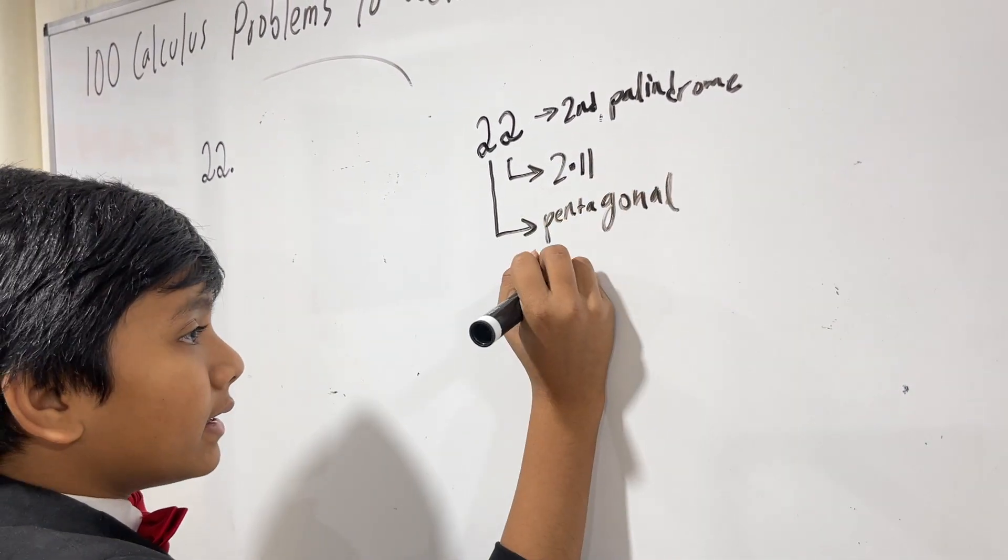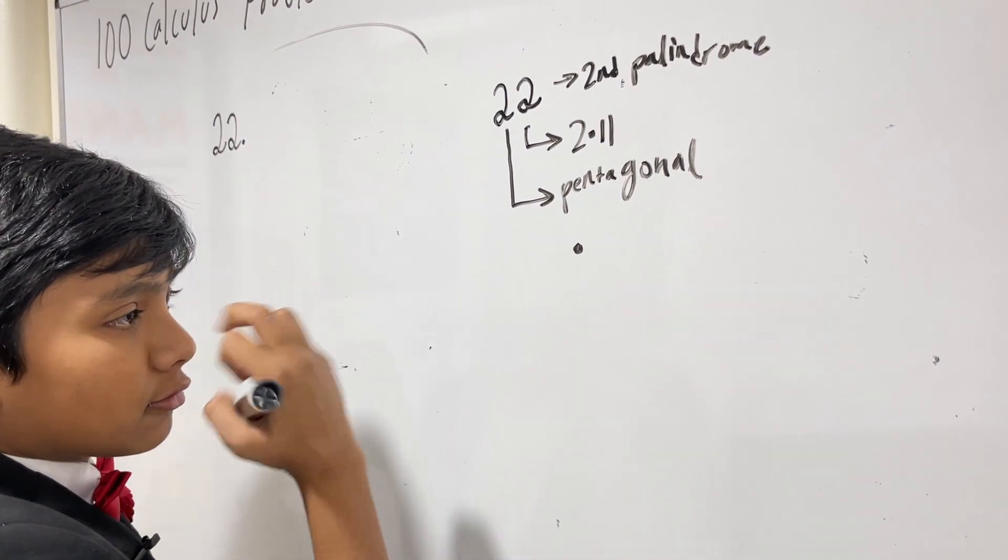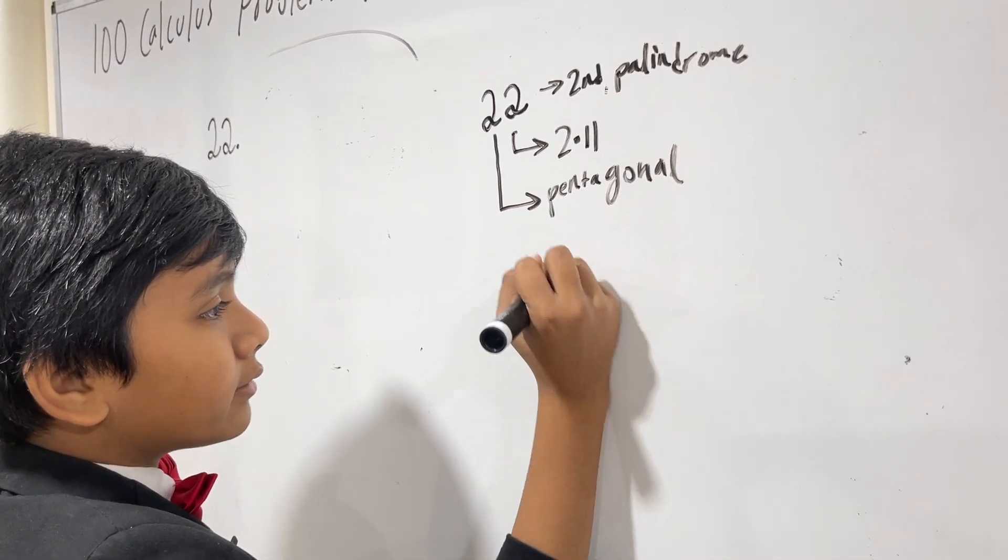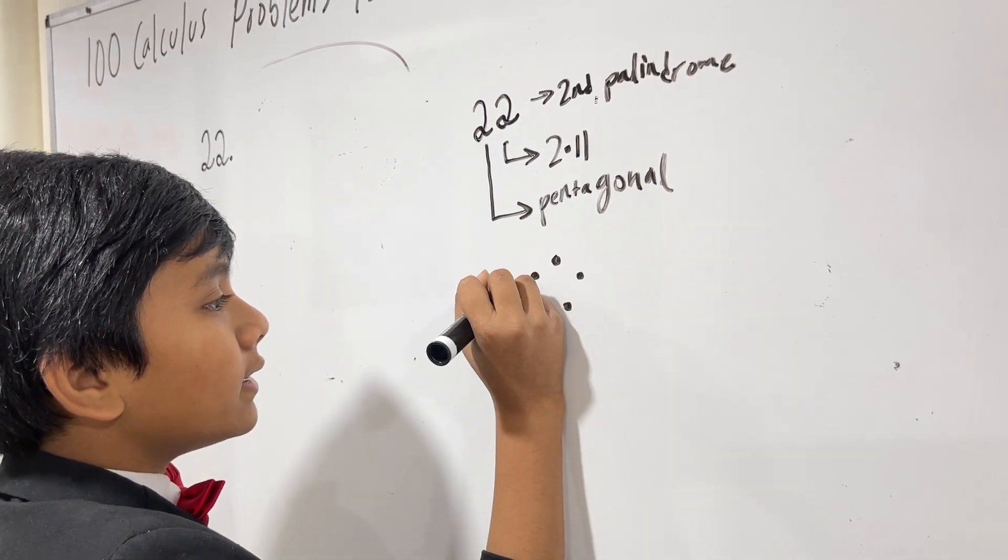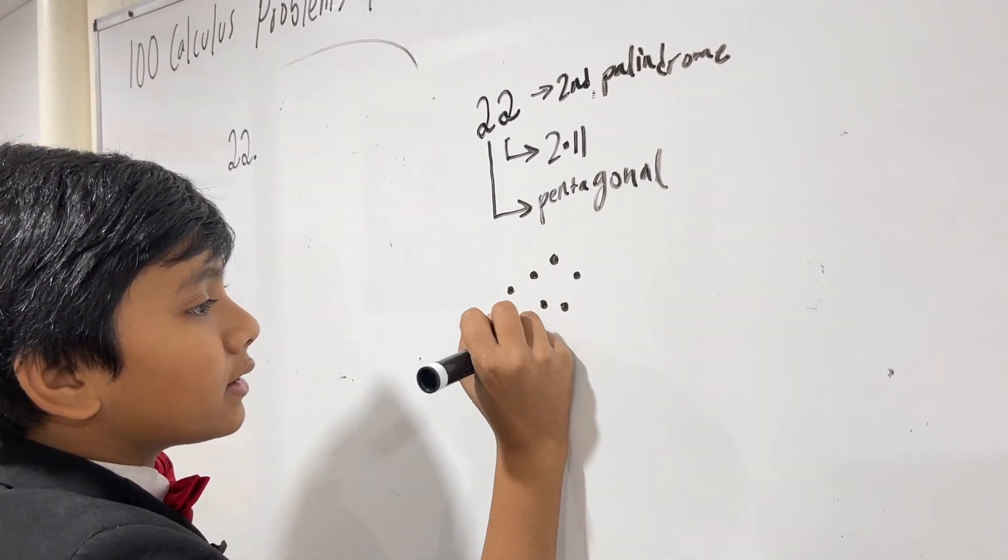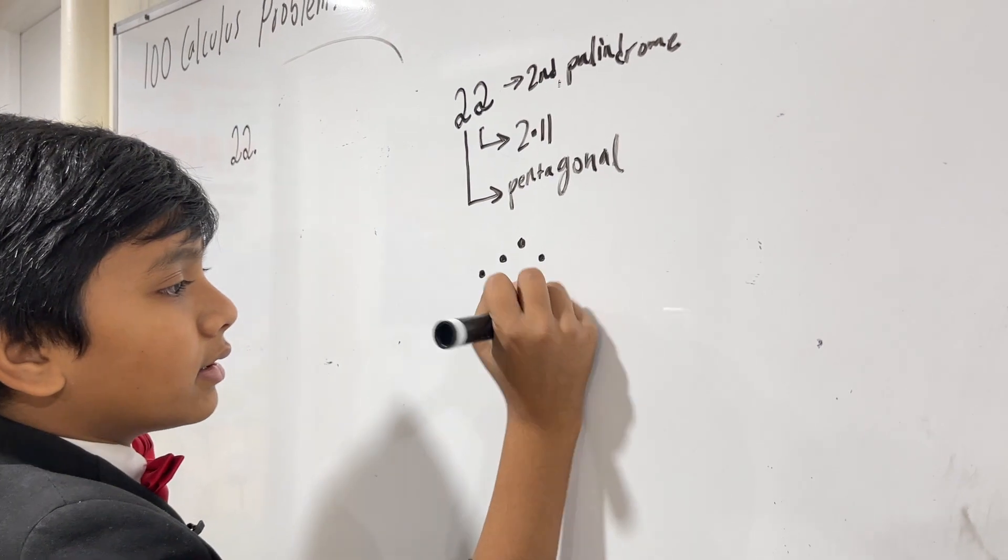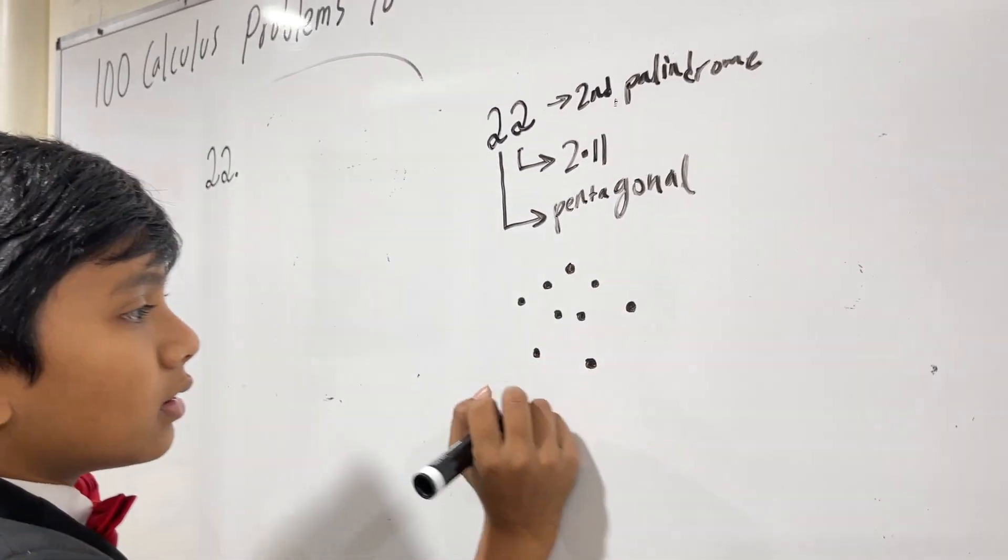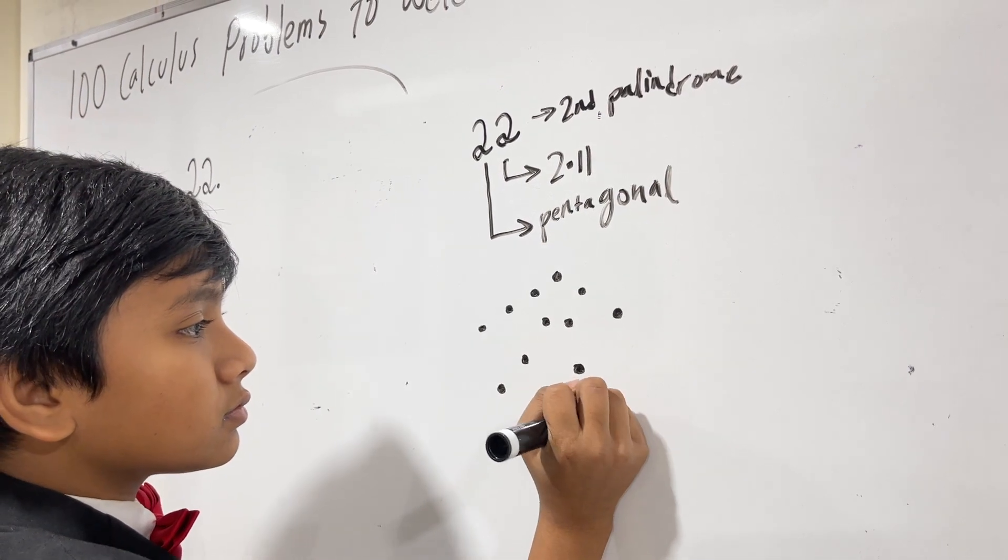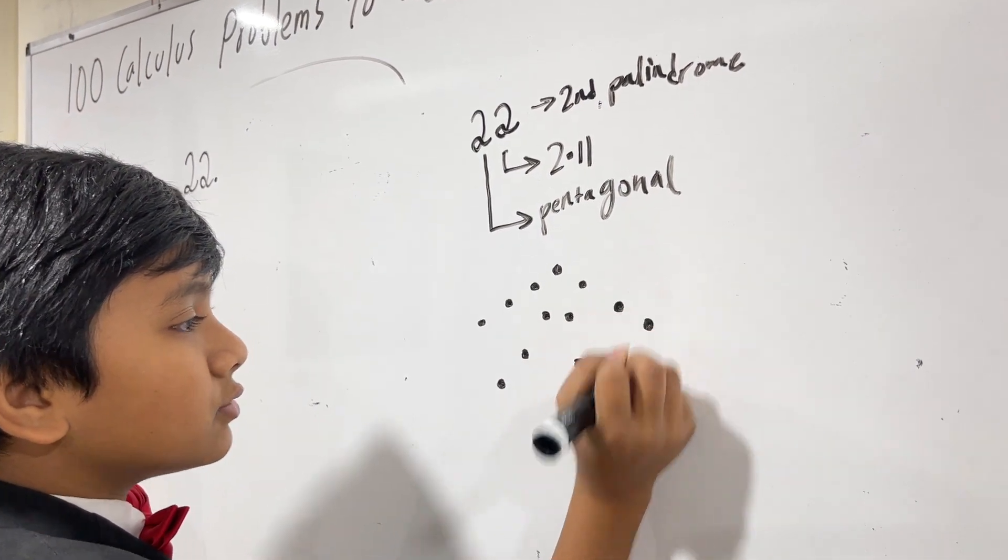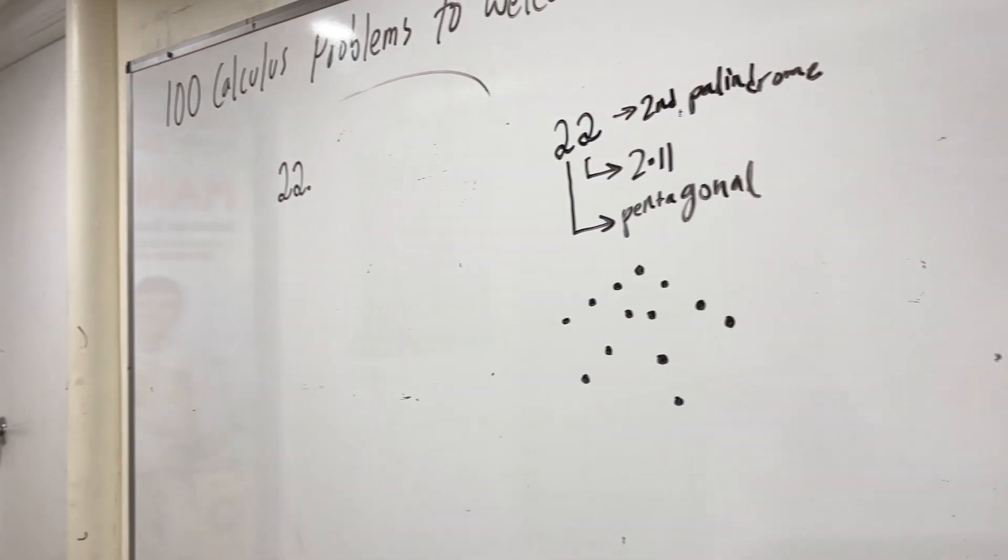Well, basically, if you take this, this is 1, right? Now let's expand on that, and we have 5. And then, let's make our pentagon bigger, 3, 4, and now let's make it even bigger, and eventually you'll reach 22 via this sequence.